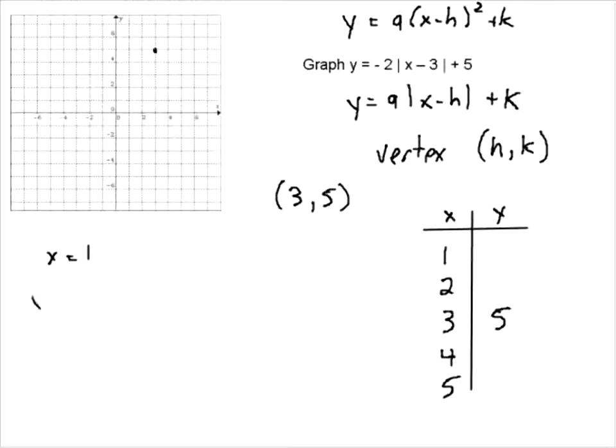So let's check X equals 1. If we put 1 in there, we're going to get negative 2, absolute value of 1 minus 3 plus 5. So this is going to be negative 2, now the absolute value of negative 2 plus 5. So negative 2 times 2 plus 5. So we're going to get negative 4 plus 5, which is just 1. So we're going to be at 1 and 1.